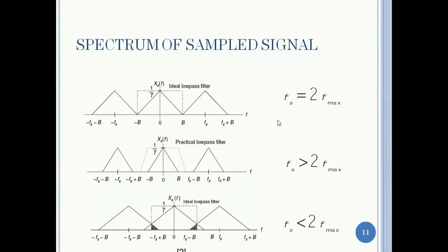These plots show the spectrum of the sampled signal with different values of sampling frequencies. In the first case, sampling frequency is taken as exactly twice the maximum frequency component. In the second case, sampling frequency is selected to be greater than twice fmax. In the third case, the sampling frequency is selected to be less than twice fmax.